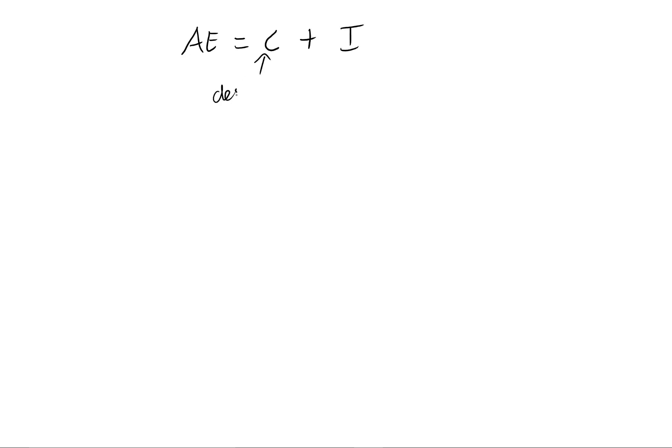Remember C is desired consumption, and I is desired investment. So in this really simple model there's no government, there's no exports, or anything like that. And we've also assumed that both this C and this I have certain functional forms. This consumption function of C equals A plus B times YD. And remember that this YD is just disposable income.